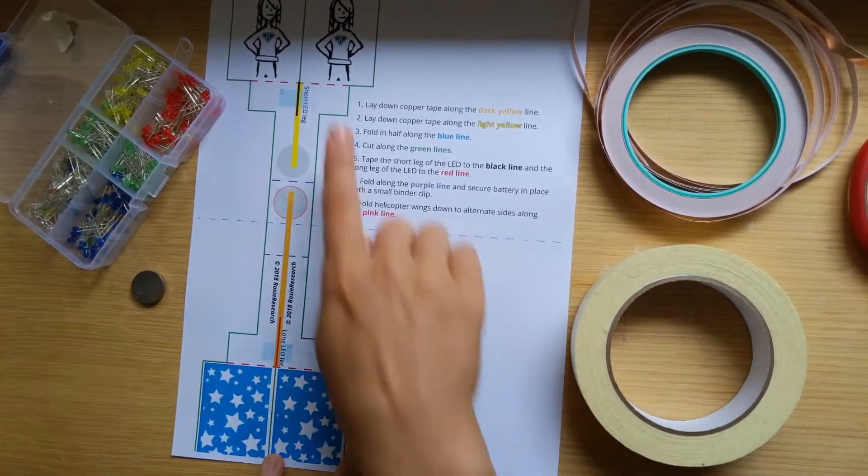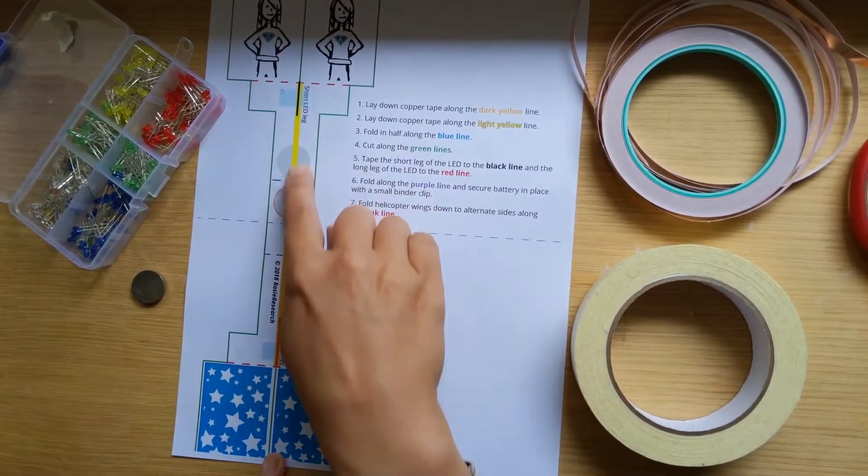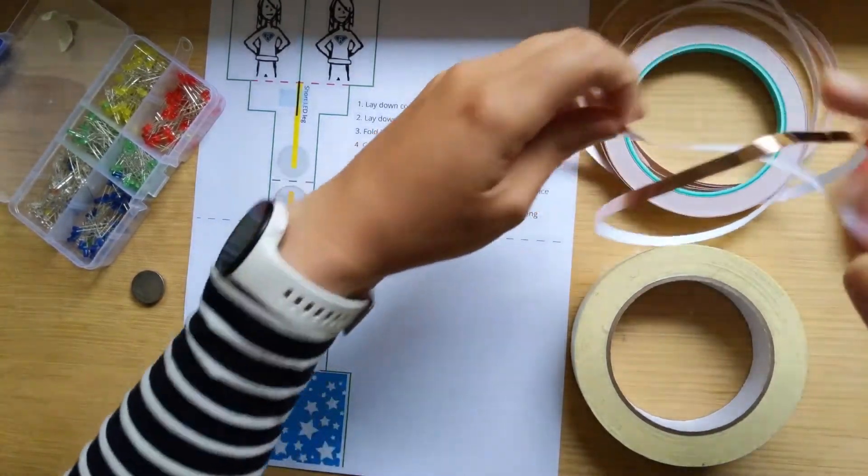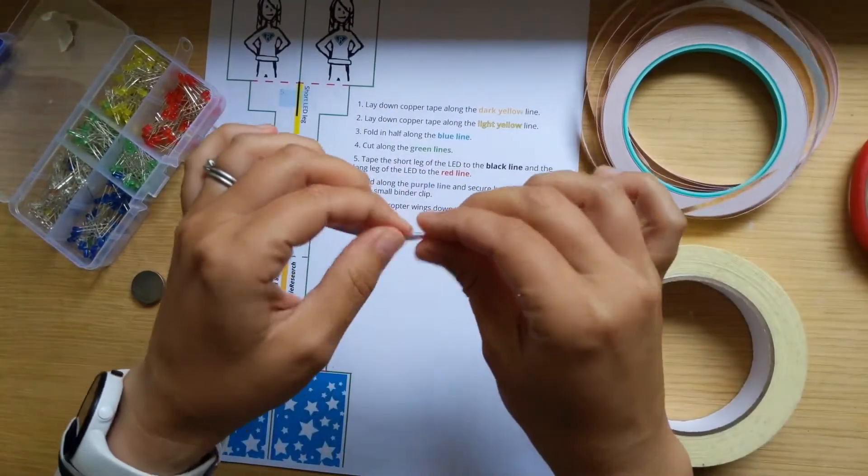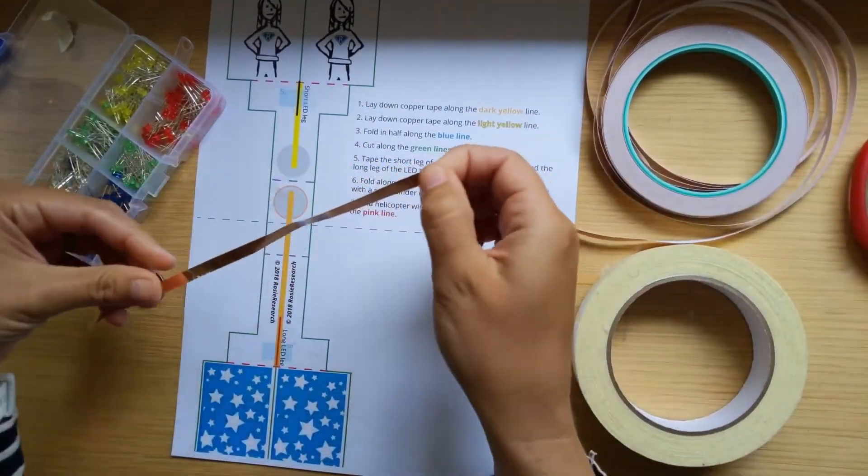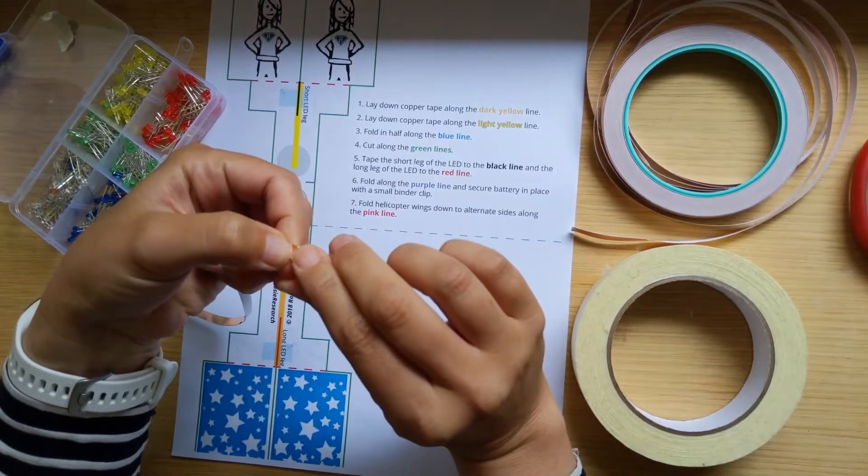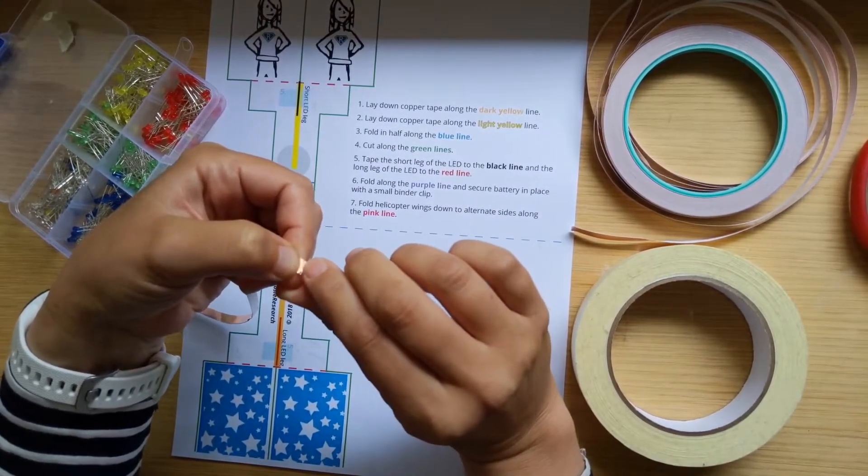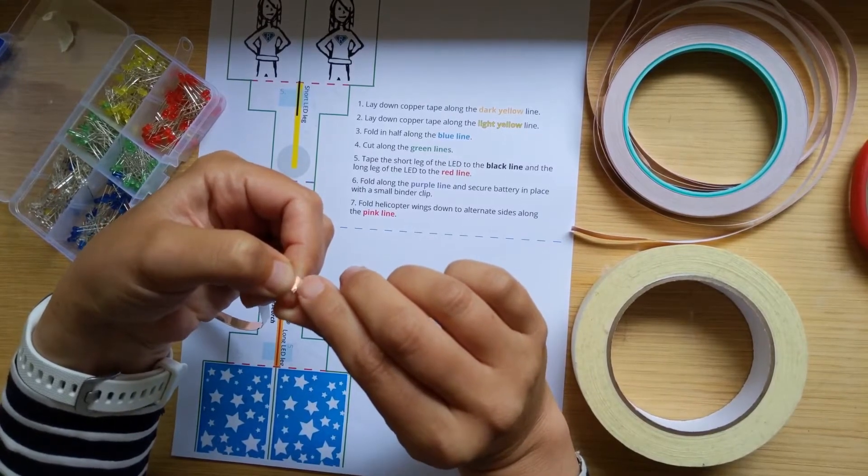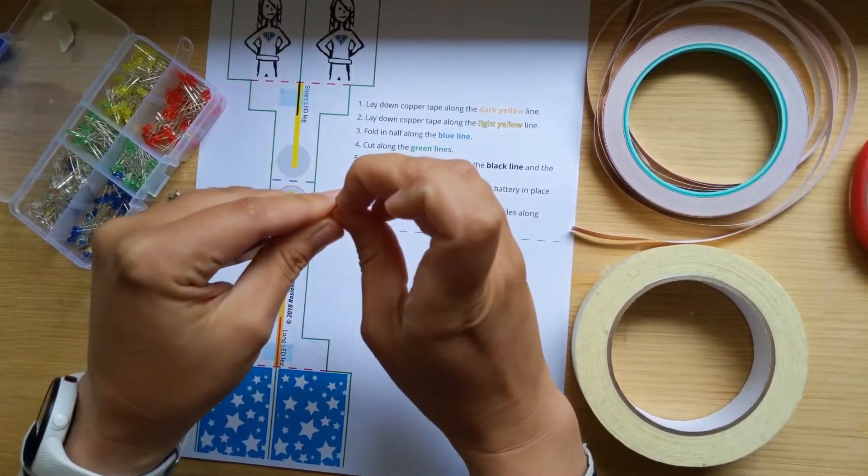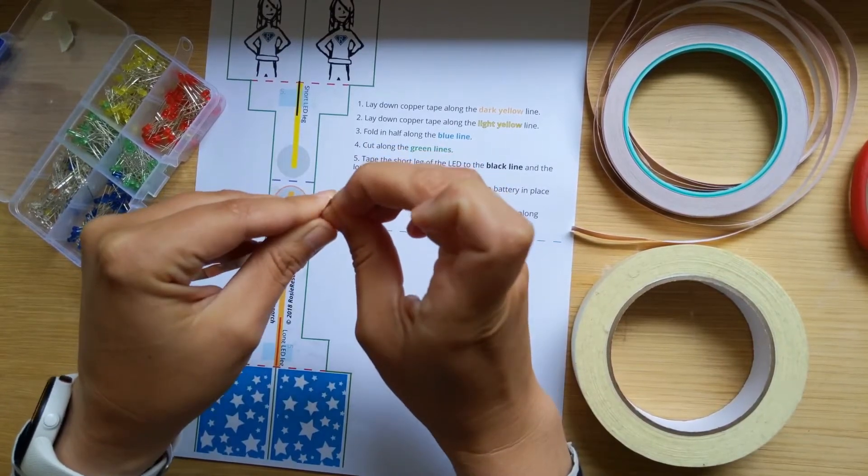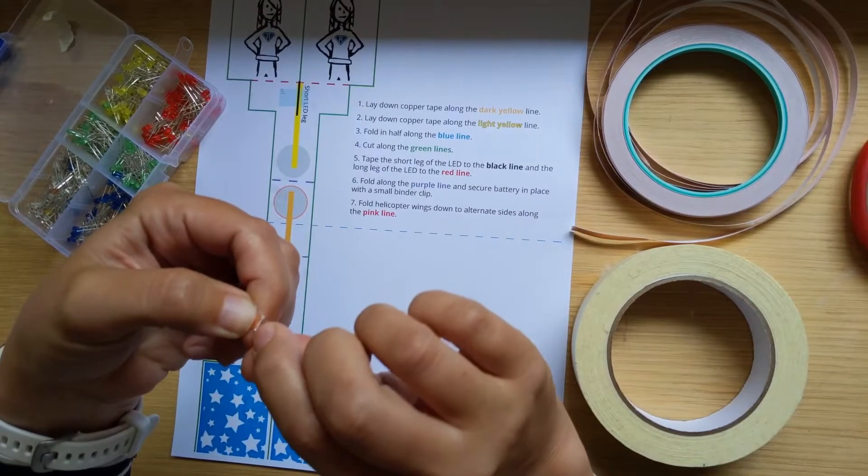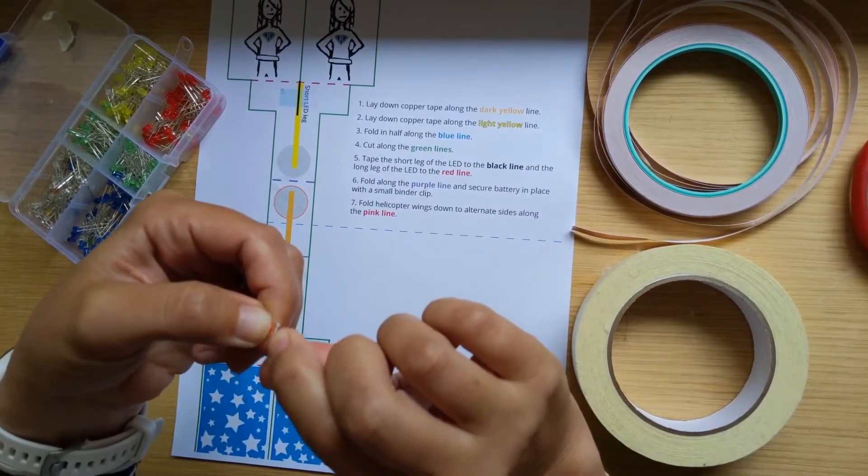So the first thing we're going to do is lay down some copper tape on these two lines right here. Now when you take your copper tape, you can rip it with your hands. You're going to want to get it started with your fingernail, right between the copper tape and that white paper backing. It can be tricky sometimes, and you just have to be patient. There we go. Sometimes once it gets started, it's a little bit easier.